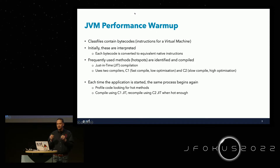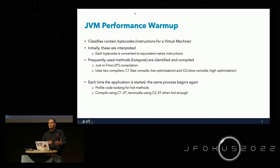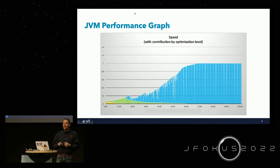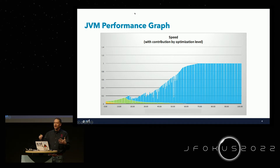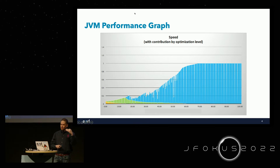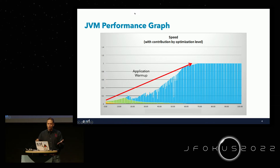There is a problem: each time we start the application, we go through the same process again. We have to find those hot methods, compile them with C1, profile them, then recompile with C2. Start the application again and you do the same thing again — very inefficient. Looking at a performance graph, we start very slowly in interpretive mode, gradually compile methods with C1, then C2, and eventually reach our steady-state maximum performance level. The time it takes to reach that level is called the warm-up.